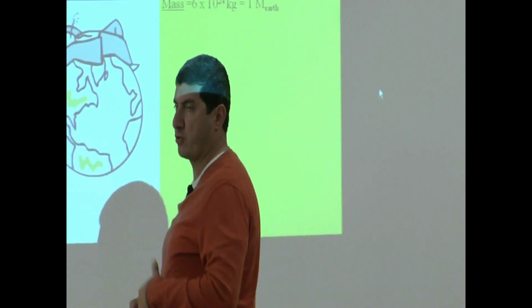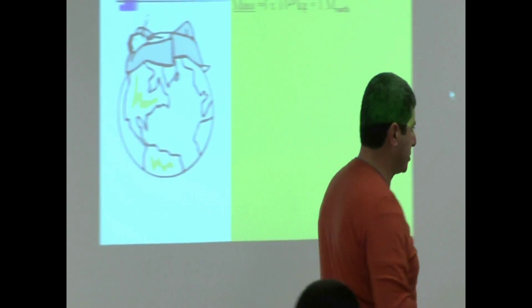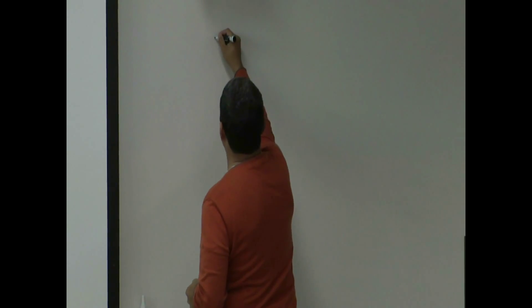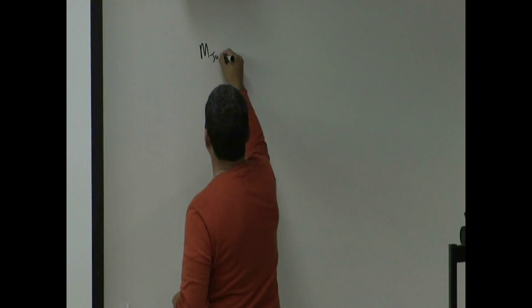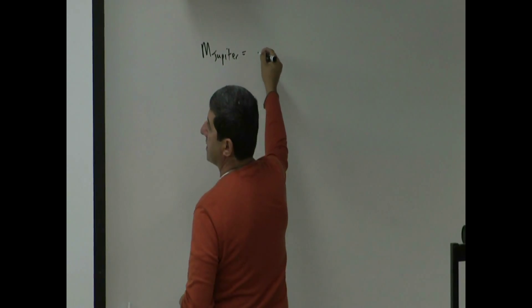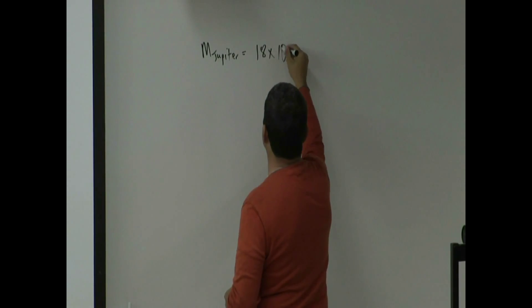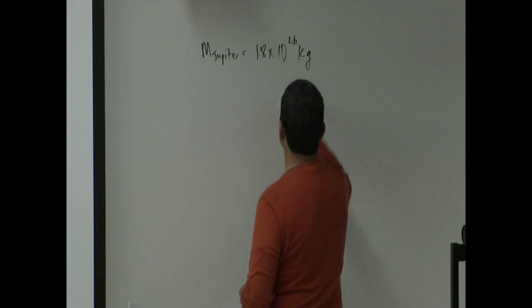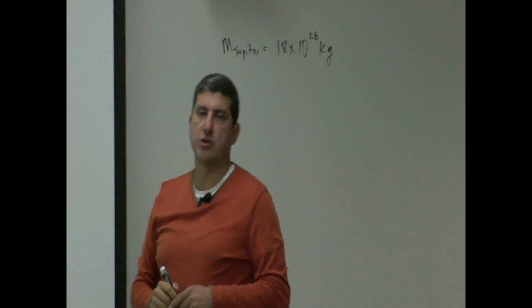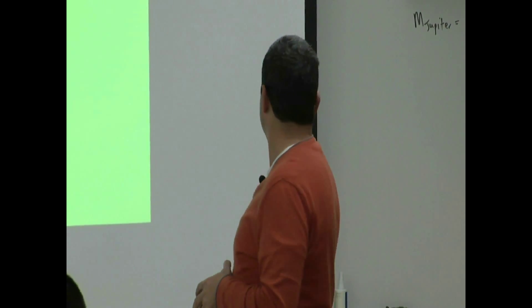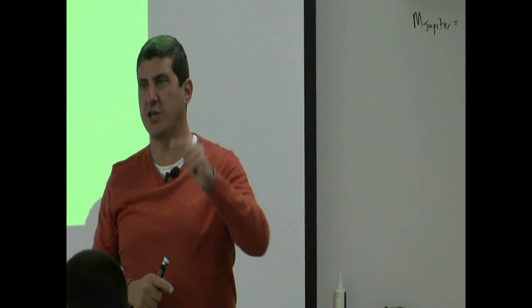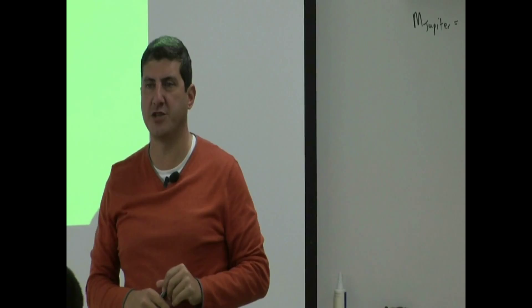So, if you are telling us in your report the mass of Jupiter — let's say the mass of Jupiter is 18 times 10 to the 26th kilograms — then in relation to the Earth, how much heavier would that be? You could tell us how much heavier than the Earth that is.